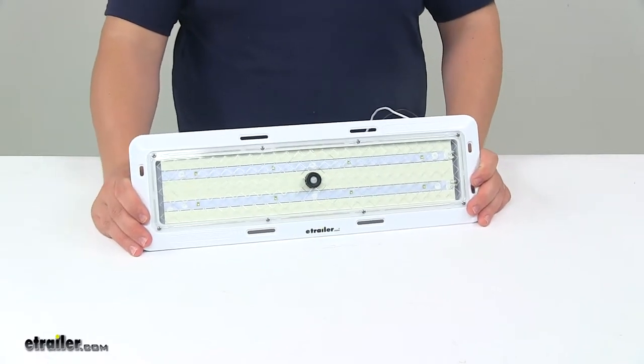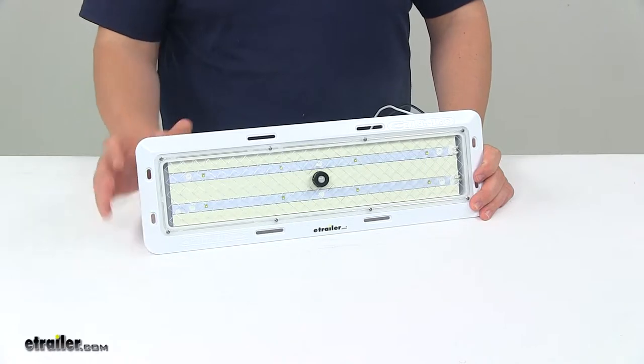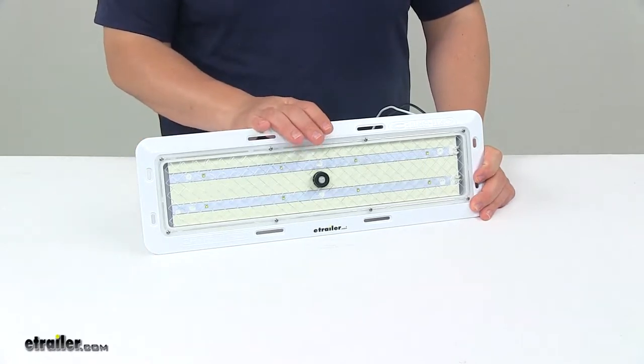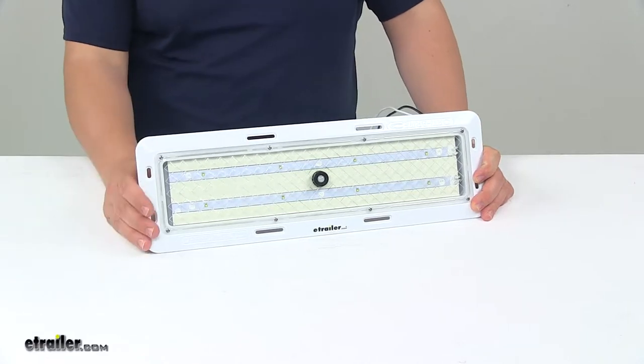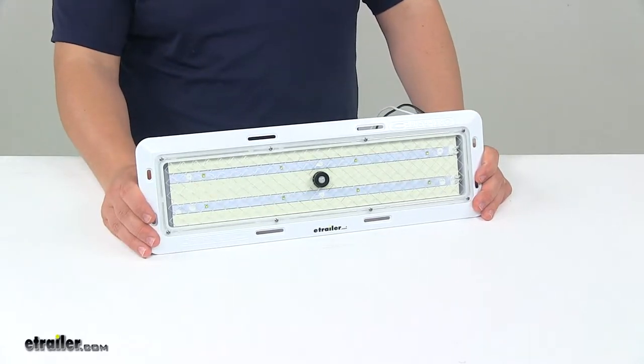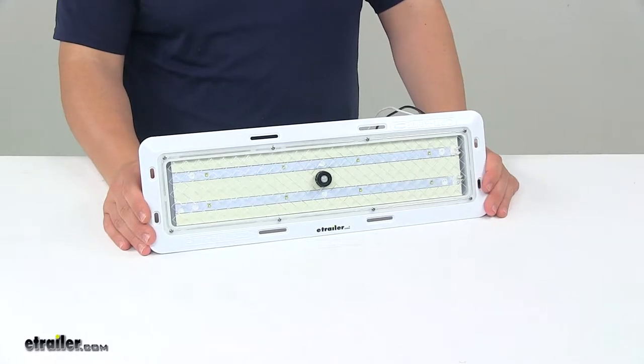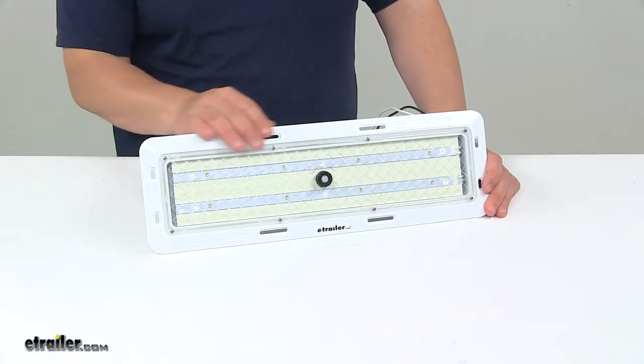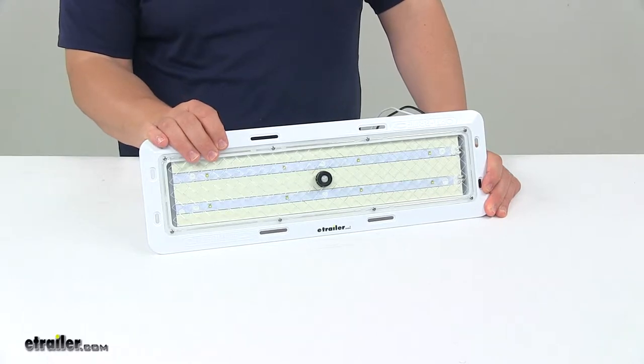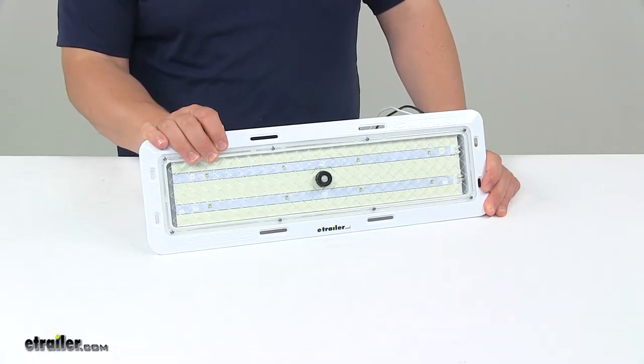Operating voltage is 7 to 30 volts DC. Voltage cutoff at 7 volts prevents battery drain. You can use this with 12 volt and 24 volt DC systems. The light output remains consistent at all operating voltages and cuts off when the voltage is outside of range.